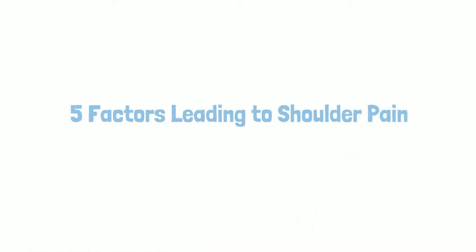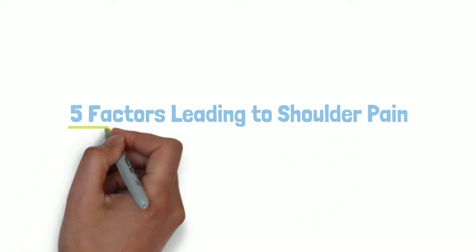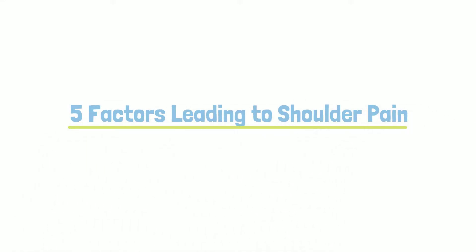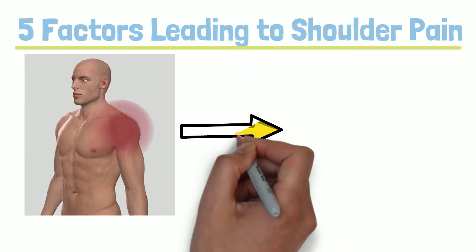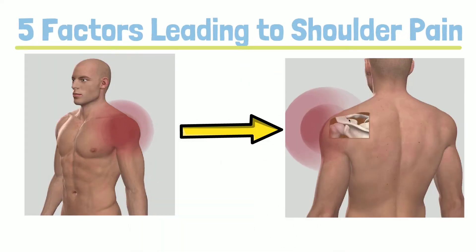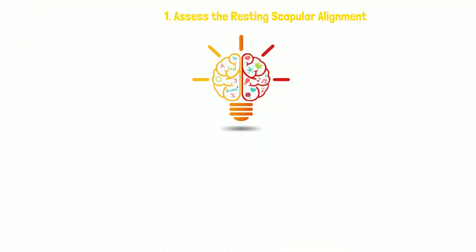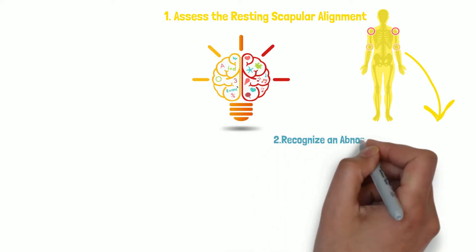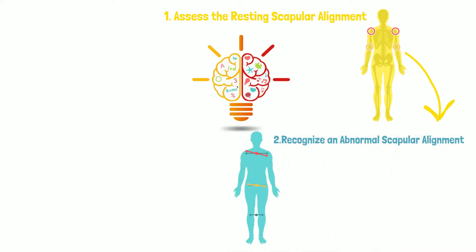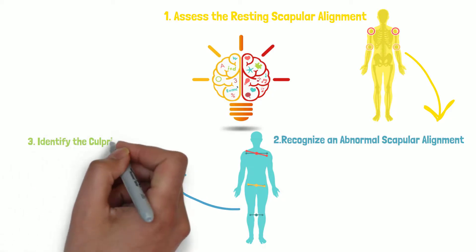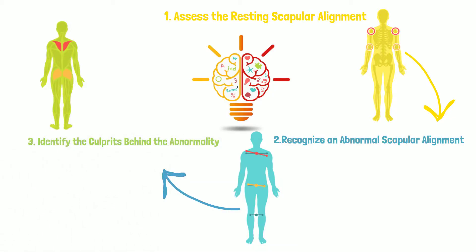In today's video we will examine five factors that can lead to shoulder pain. Shoulder pain can sometimes be related to an abnormal alignment of the shoulder blade. After watching this video you will be able to assess the resting scapula alignment, recognize an abnormal scapula alignment, and identify the culprit behind the abnormality.